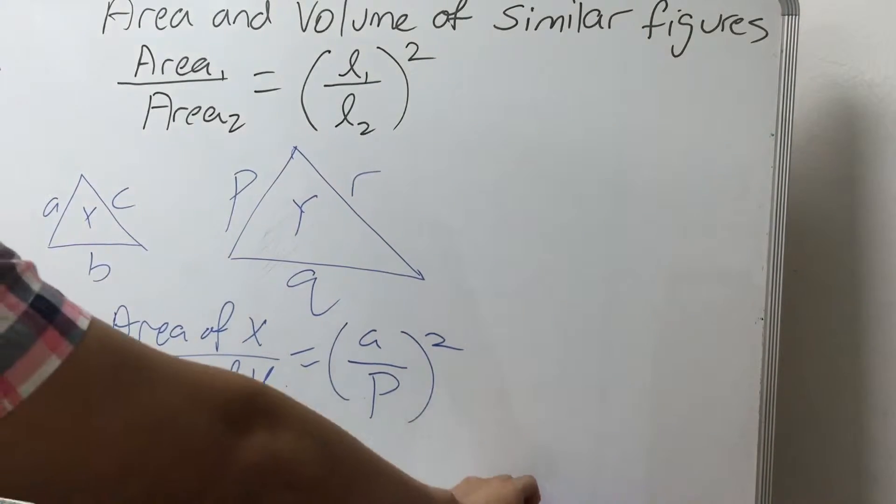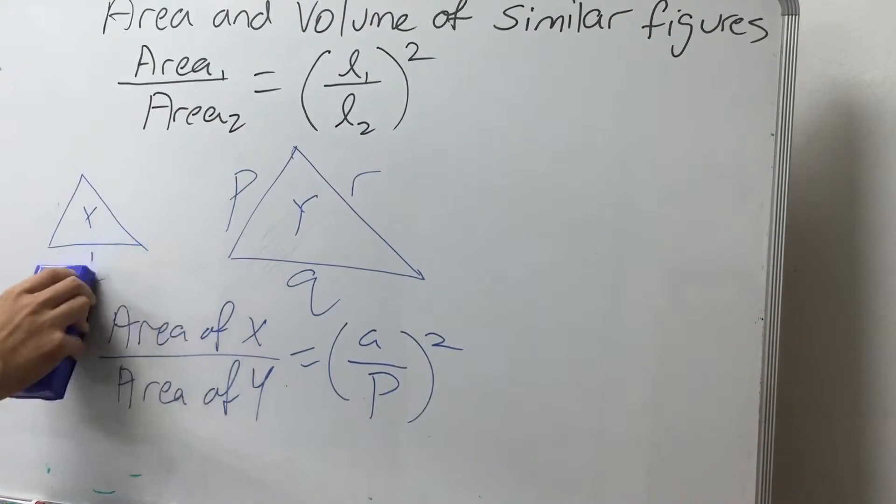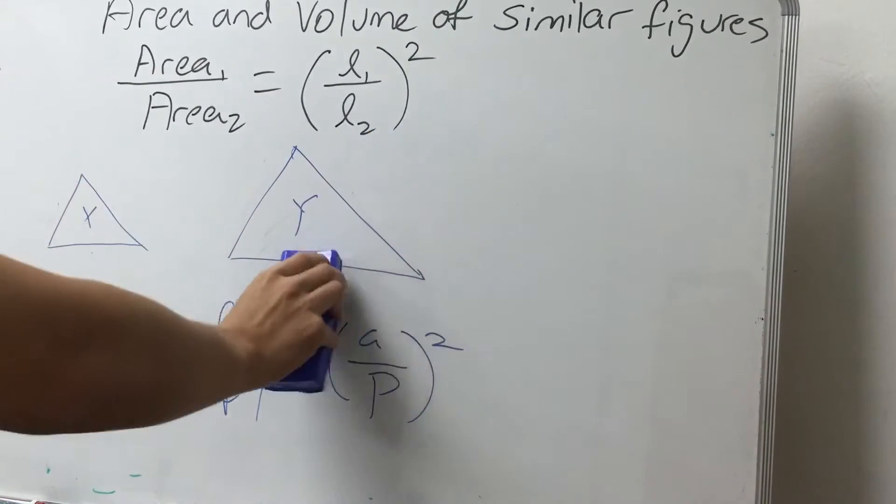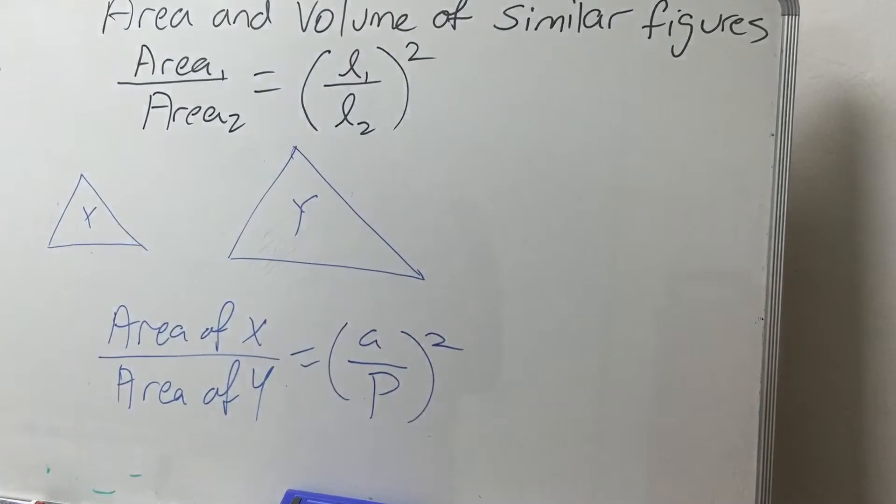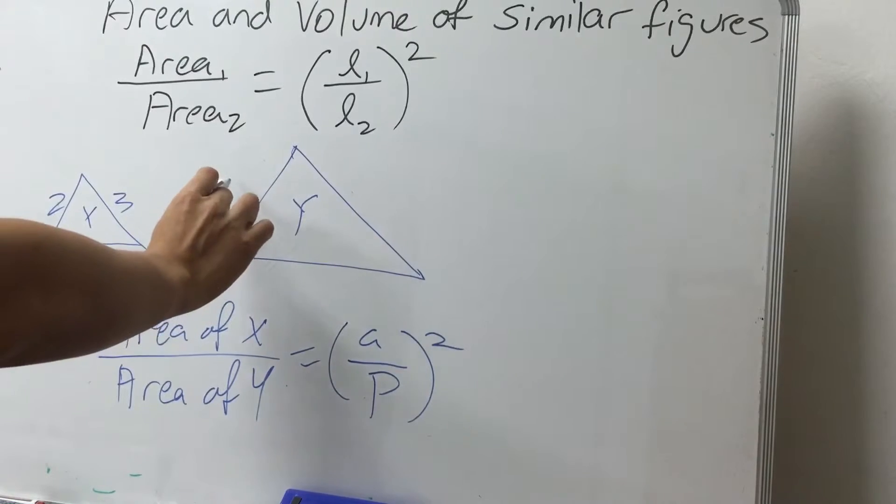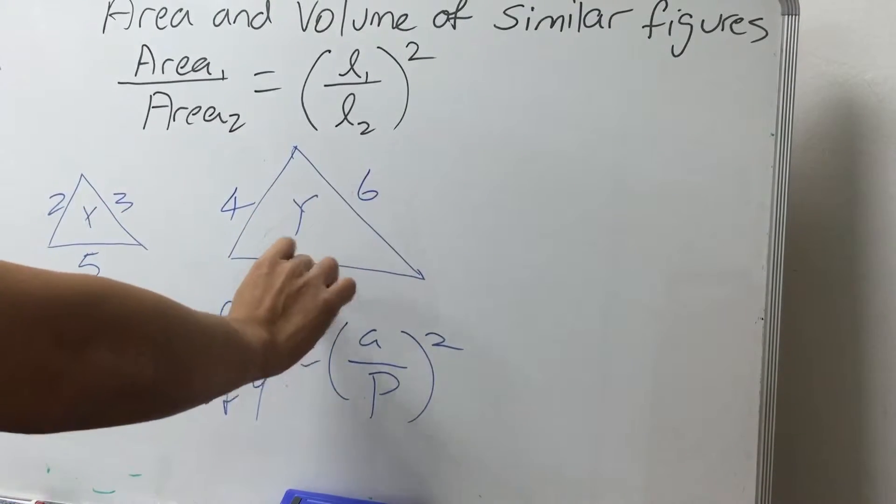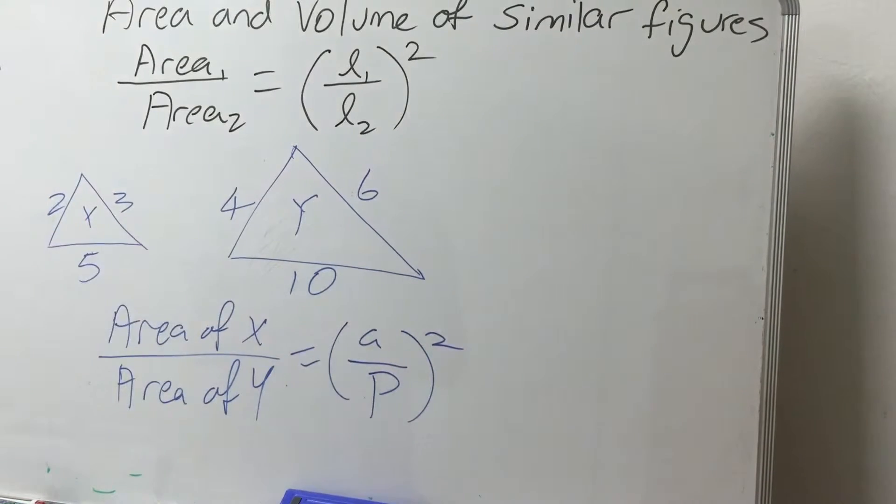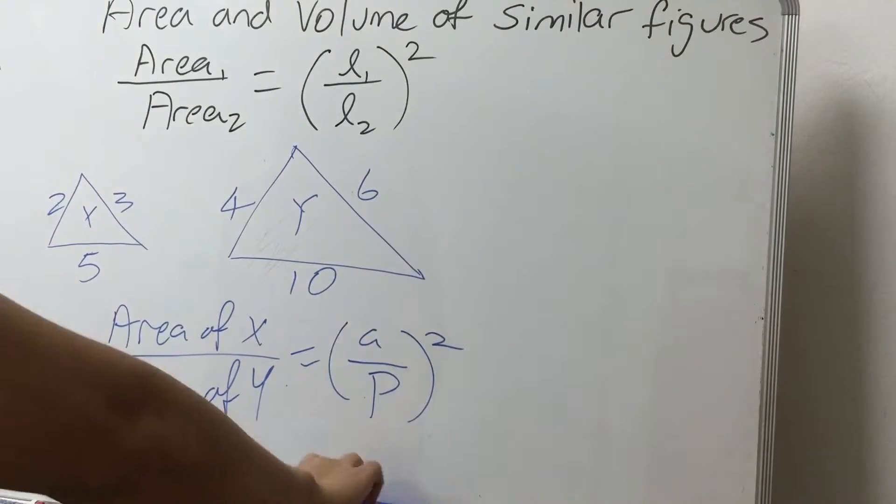Now let's do this with some numbers instead of alphabets. So let's say that the length of the side A, B, and C just now is 2, 5, and 3. And for this side, let's call it 4, 6, and 10.